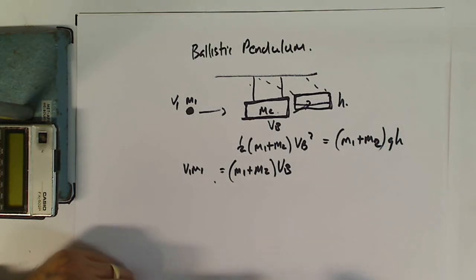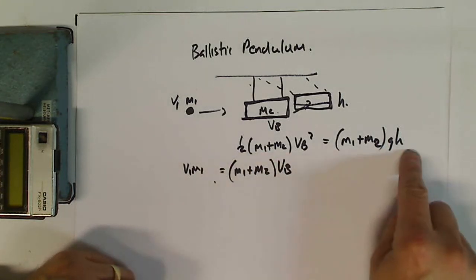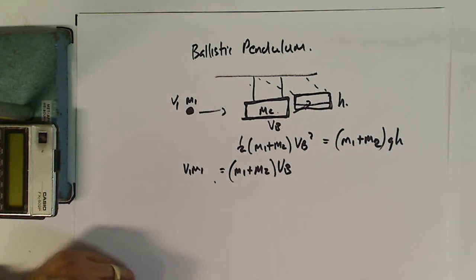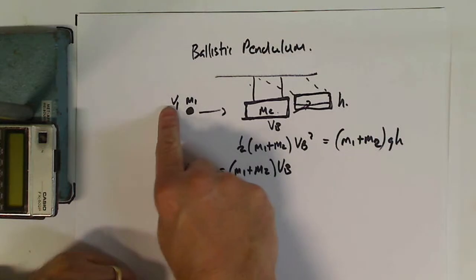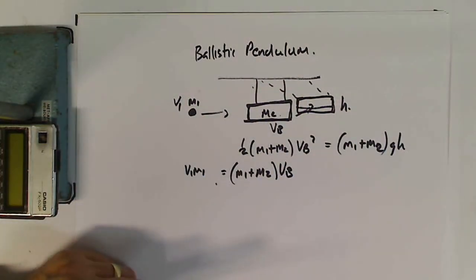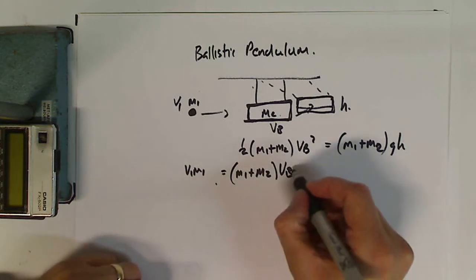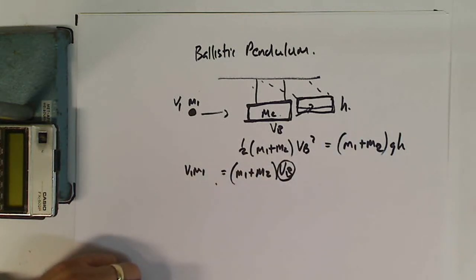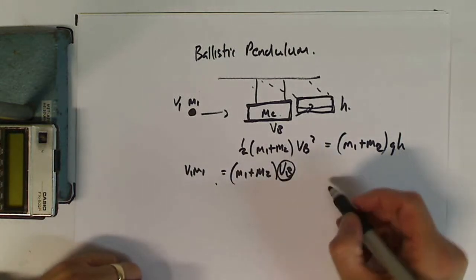Now the thing is that when I look at this problem here, I don't really want to have vb. I want to know v1 in terms of h, so I want no vb's in the equation. And this little one is going to enable me to get rid of the vb.